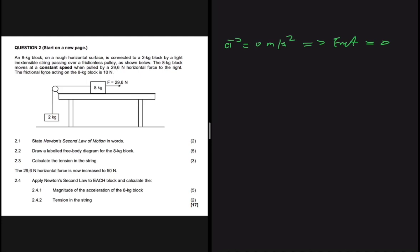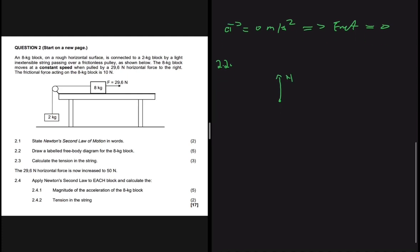Question 2.2 says: draw a labelled free body diagram for the 8 kg block. If you've worked through questions like this, I'd advise you to pause and do it yourself first. So — the free body diagram on the 8 kg block: there we have the 8 kg block sliding on the horizontal surface.